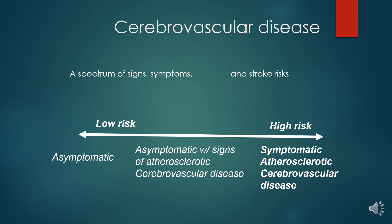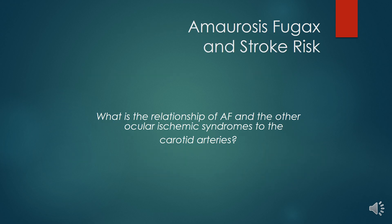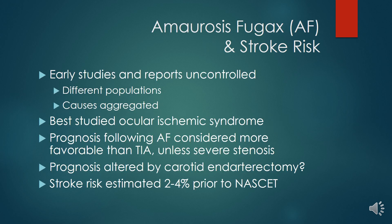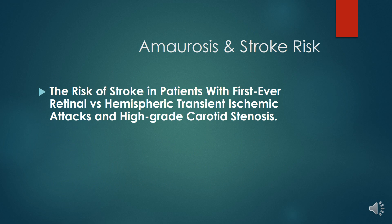Cerebrovascular disease spans a spectrum from low to high risk, ranging from asymptomatic signs of atherosclerosis to symptomatic atherosclerotic disease with cerebrovascular disease and CVA, with obvious risk of atrial fibrillation and ocular ischemic syndrome. Prognosis following amaurosis fugax is considered more favorable than TIA unless severe stenosis is present; prognosis is altered by carotid endarterectomy, and stroke risk is estimated at 2–4% prior to NASCET criteria. Studies comparing risk of stroke in patients with first-ever retinal versus hemispheric TIA and high-grade carotid stenosis have been conducted.